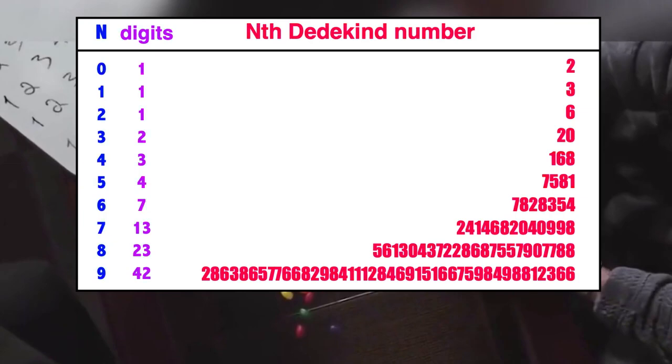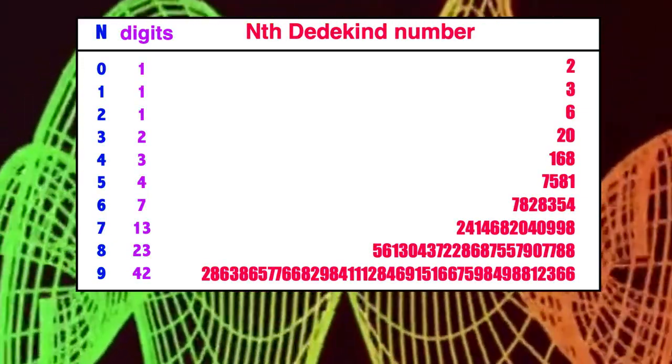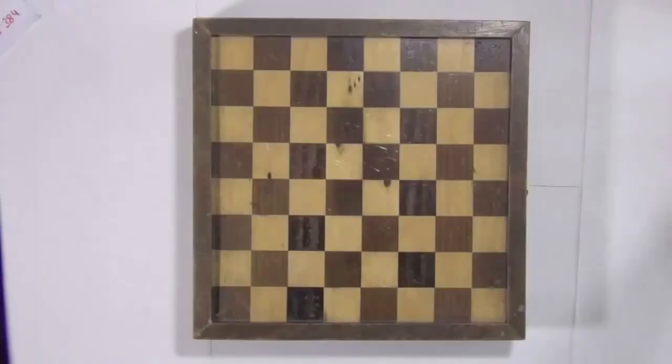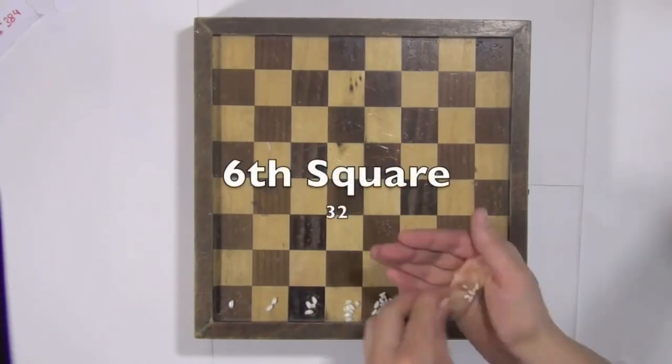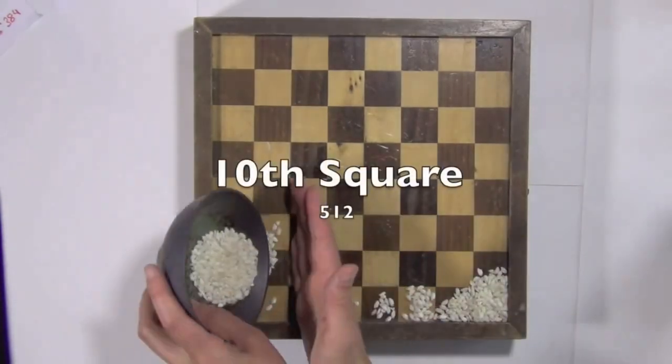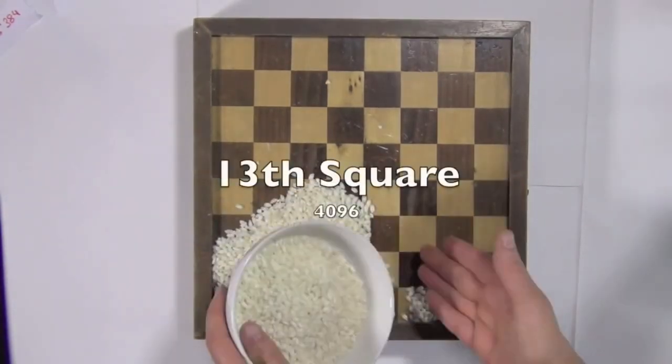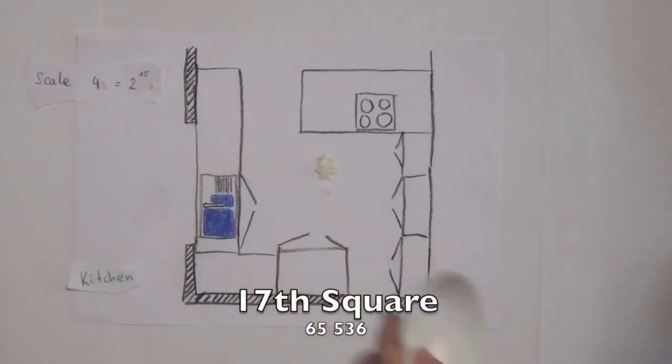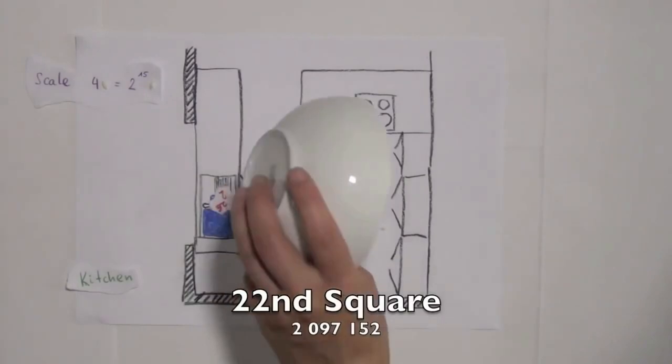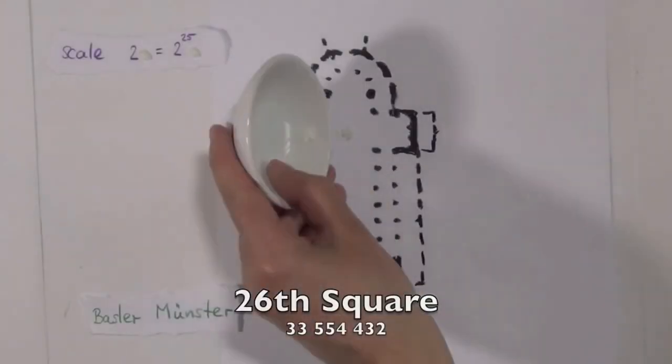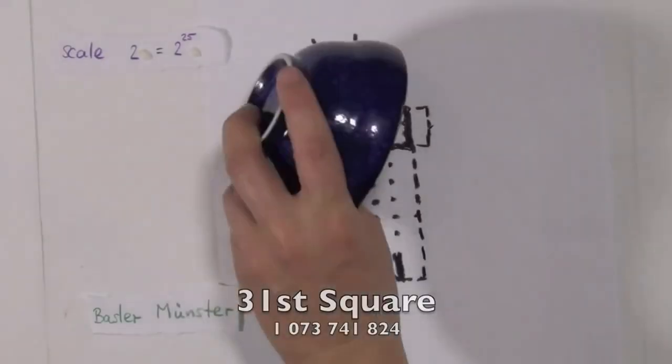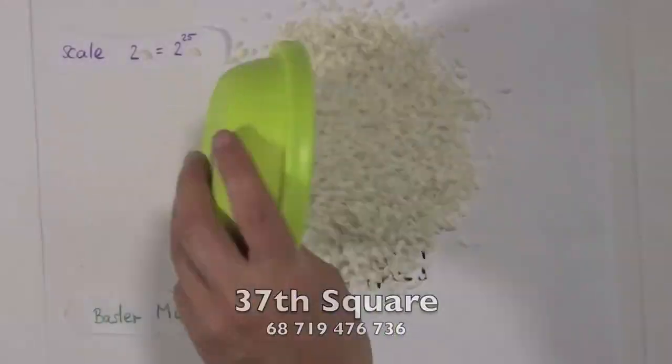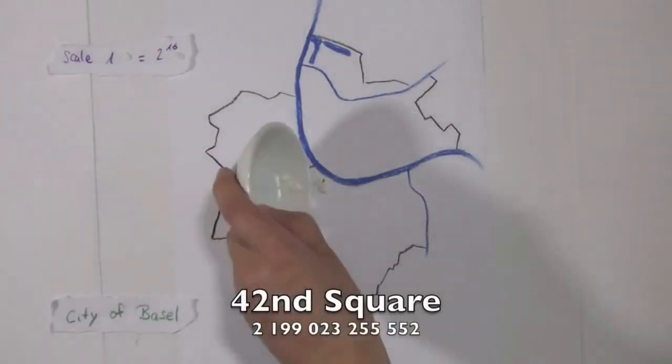To put the scale of these numbers into perspective, let's explore another fascinating story. Have you heard of the legend behind the invention of chess? It involves a series of large numbers that are surprisingly easy to calculate. The inventor of chess requested the king to place rice grains on a chessboard as a reward. Starting with one grain on the first square, the number of grains on each subsequent square doubled. By the time they reached the last square, the number of grains was unimaginably huge.